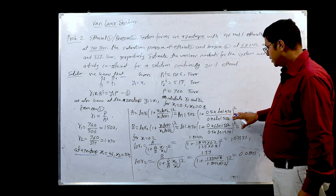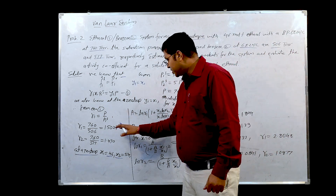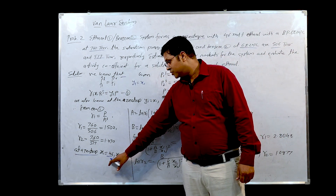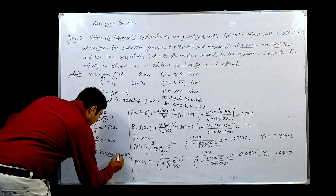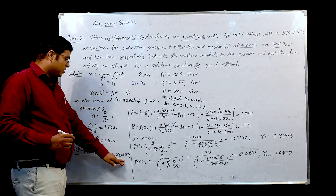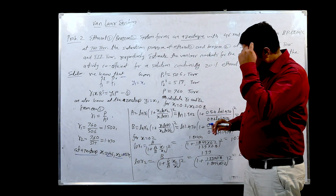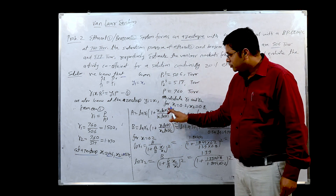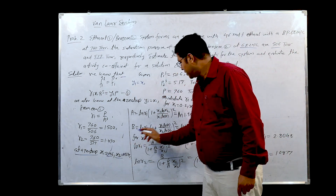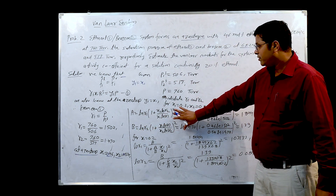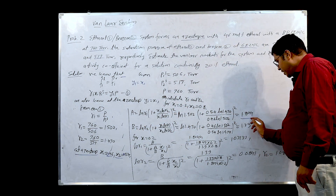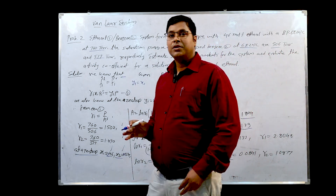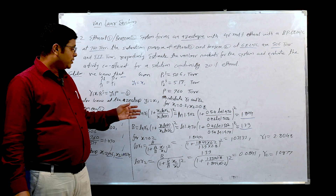We put the values of γ₁ and γ₂ into the rearranged equations. At the azeotrope, x₁ = 0.46 and x₂ = 0.54. All data are known: γ₁ and γ₂ from the previous step, and x₁ = 0.46, x₂ = 0.54. Substituting all these known values, we obtain A = 1.8144 and B = 1.39. This is the main difficulty solved — using the azeotropic data, we have calculated the constants A and B.